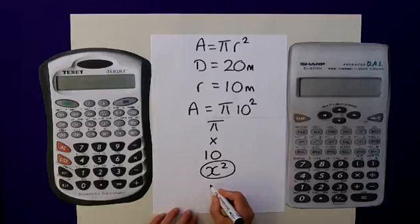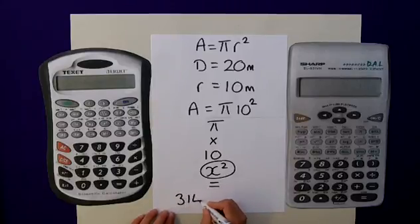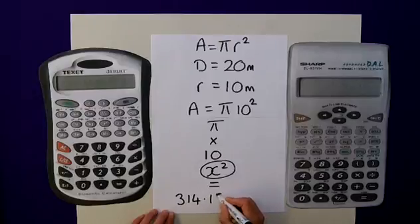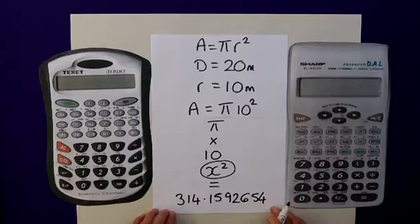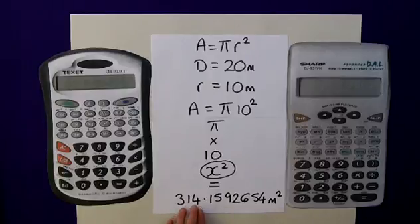I then simply press equals, and my answer will be 314.1592654, and my units for this particular project will be metres squared. Now, obviously for that, it's going to be a huge tin of paint.